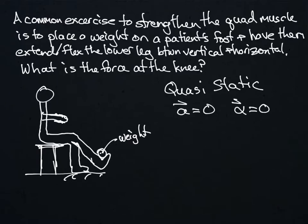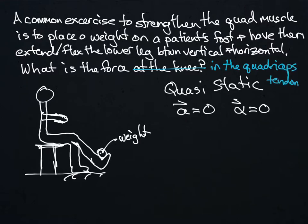In a previous example, we considered a question where a person is doing a leg lift with a weight on their ankle, and we were asked to find the forces at the knee. We used a quasi-static approach and came away with a force in the x-direction, a force in the y-direction, and a moment about the knee. This time, we're going to use force reduction to determine the force in the quadriceps tendon.